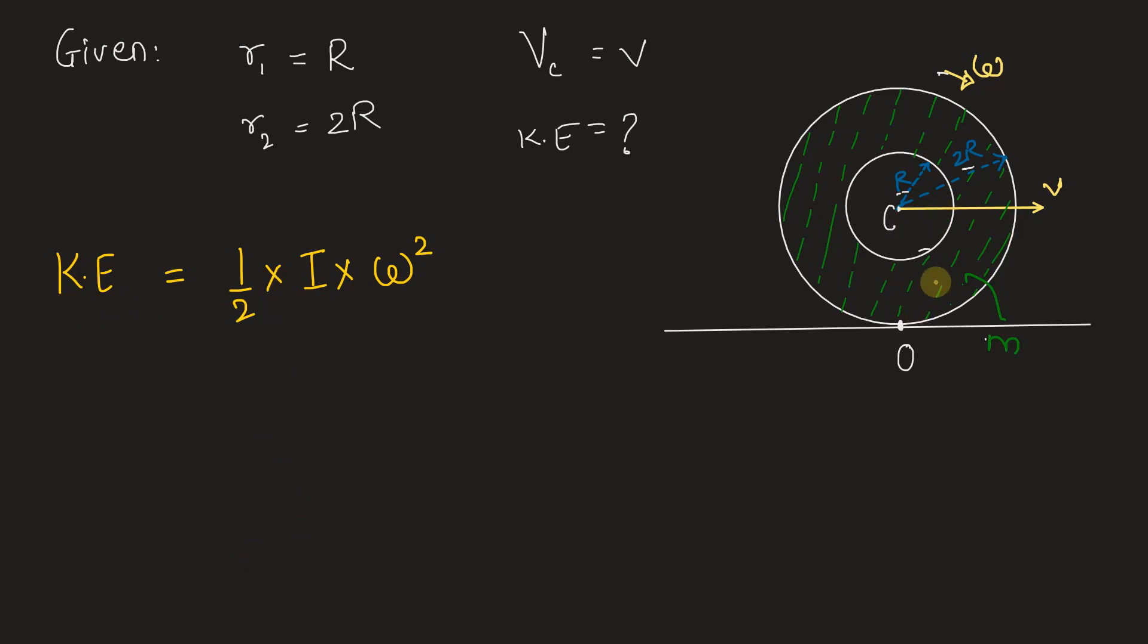Now, we will have to consider a single point with respect to which we can calculate the kinetic energy of the disc. We will consider this contact point O because this is the instantaneous center of the disc when the disc rotates.